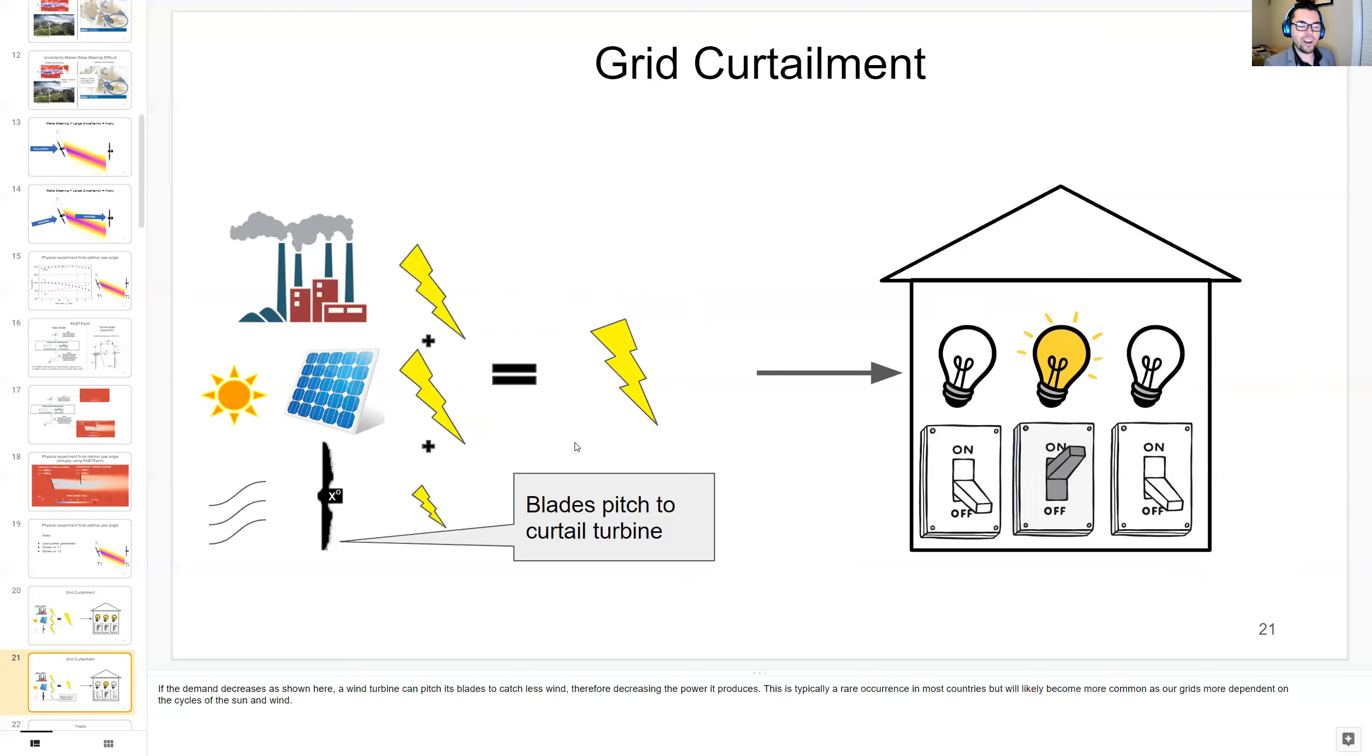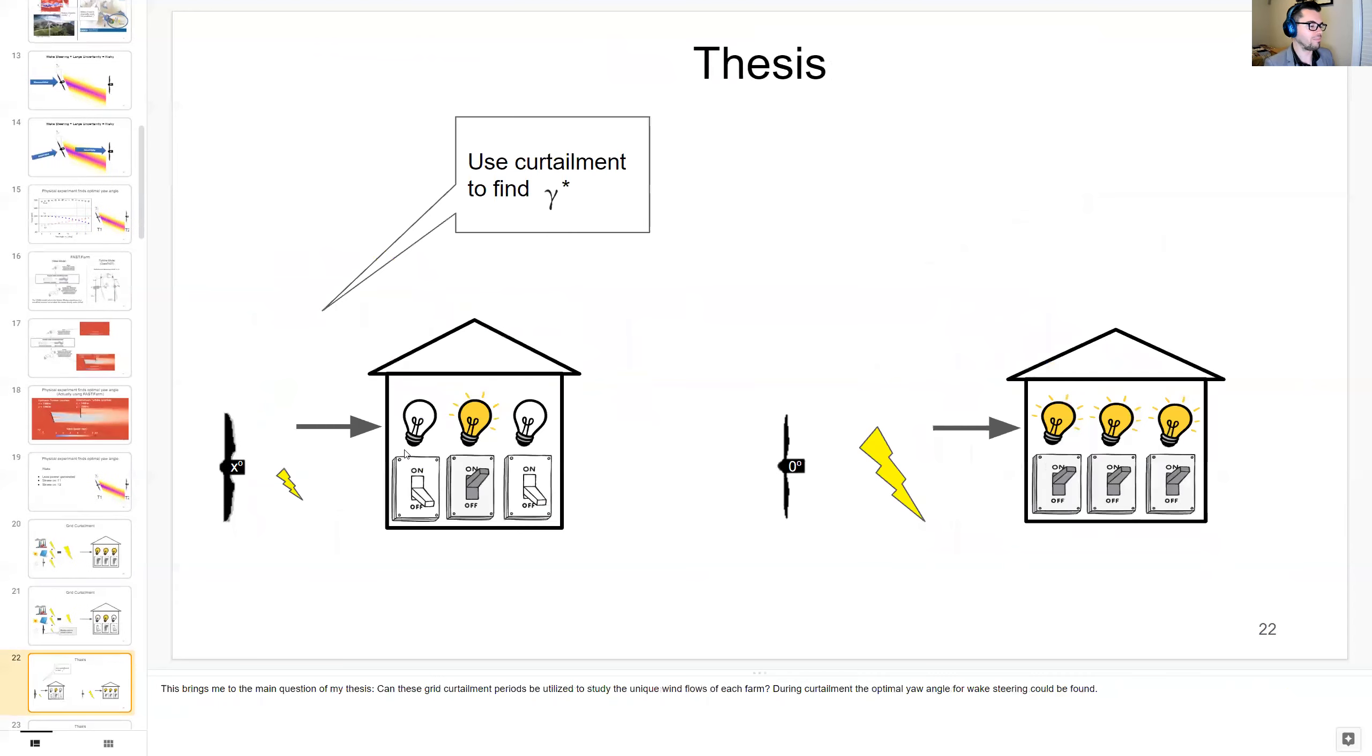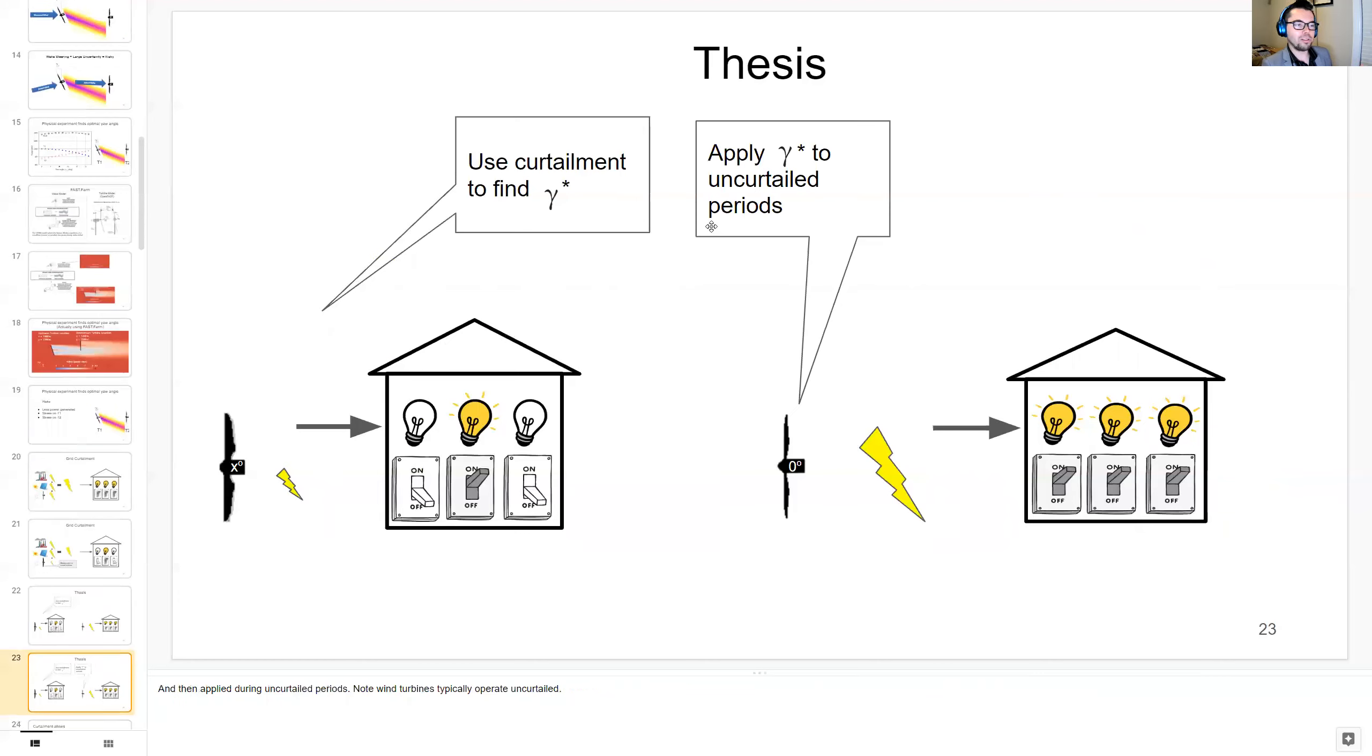And this is typically a rare occurrence in most countries, but will likely become more common as our grids become more dependent on the cycles of the sun and wind. This sort of brings me to the main question of my thesis. Can these grid curtailment periods be utilized to study the unique wind flows of each farm? Basically during curtailment, the optimal yaw angle for wake steering could be found and applied to these uncurtailed periods, which encapsulate the more common operation of wind farms.